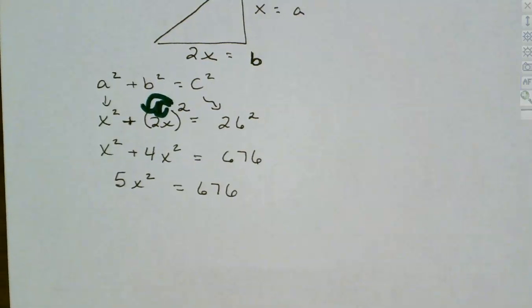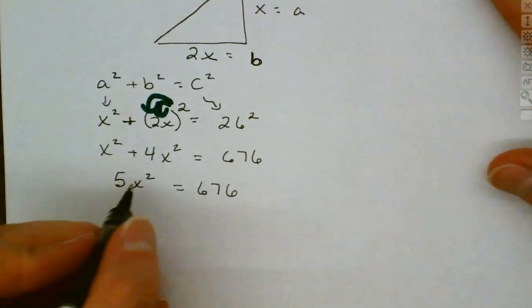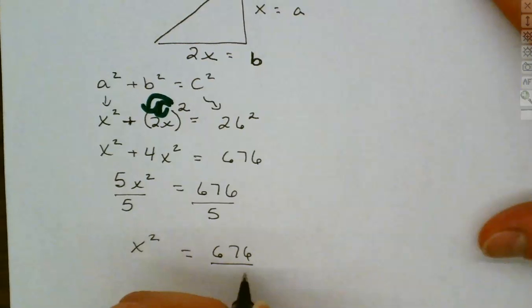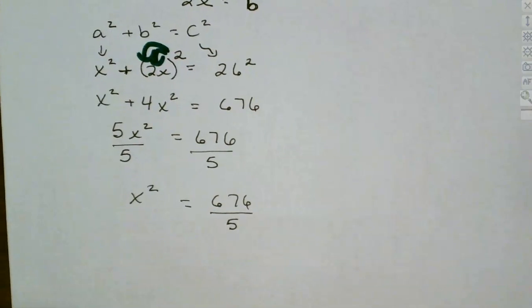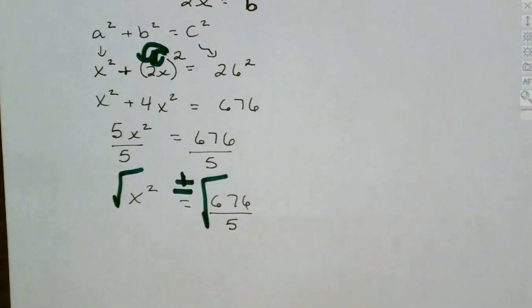This one is going to use the square root property. To use it, the only x we have must be an x squared, and it must be by itself on one side — which it is. So I divide by 5 to get x squared by itself. Then take the square root of both sides — don't forget the plus or minus. We're not going to worry about the negative solution because we cannot have a negative length or width.